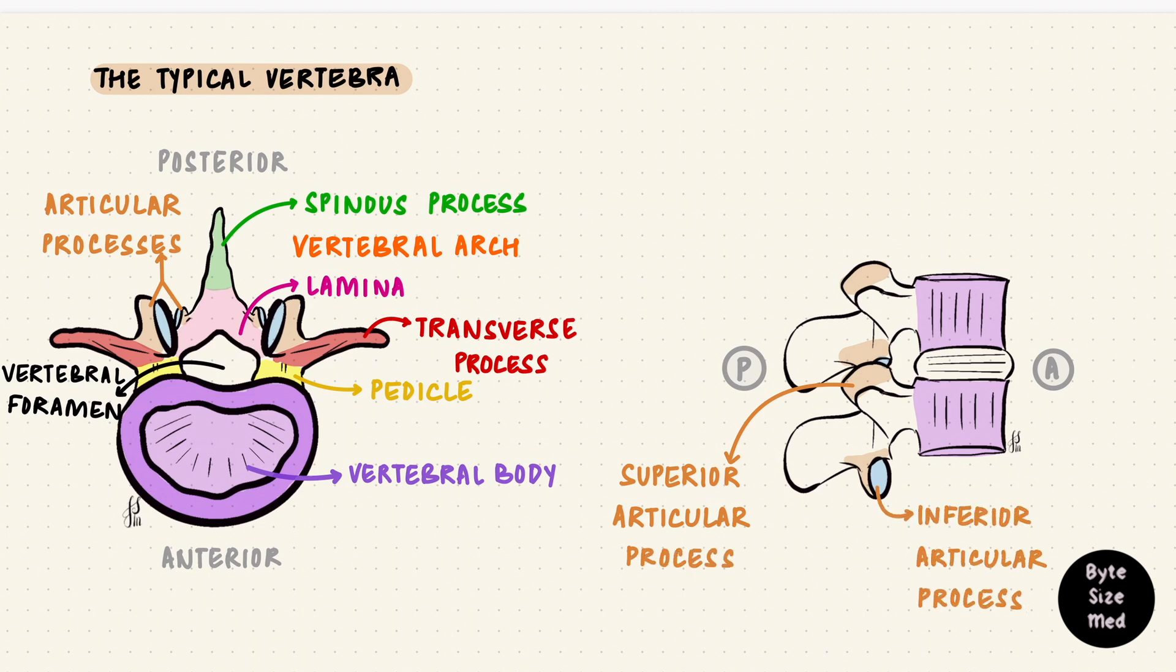They articulate with each other. The superior articular process of one vertebra articulates with the inferior articular process of the vertebra above it. These are the articular facets, also called the zygapophyses. They form joints called the zygapophyseal joints or the facet joints. This joint results in two notches between the vertebral body and the articular processes, the superior and inferior articular notches.